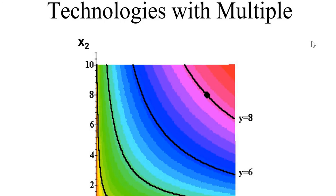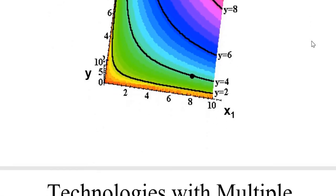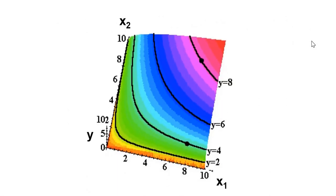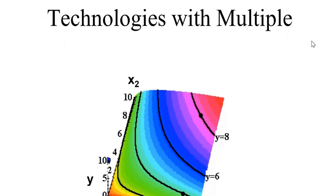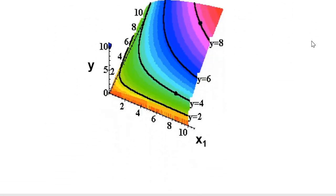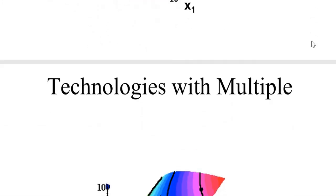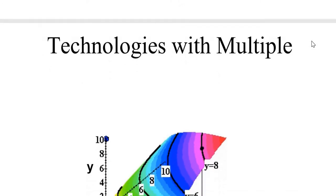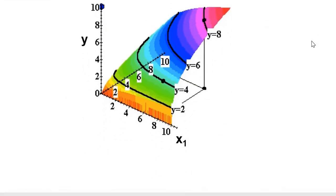The isoquant is shown with the depth of color indicating output level. If we rotate the diagram, you can see that it gives you the level curves. This is what the isoquant looks like from 0 to 10. The output level shows that x1 and x2 are now embedded in this curve.